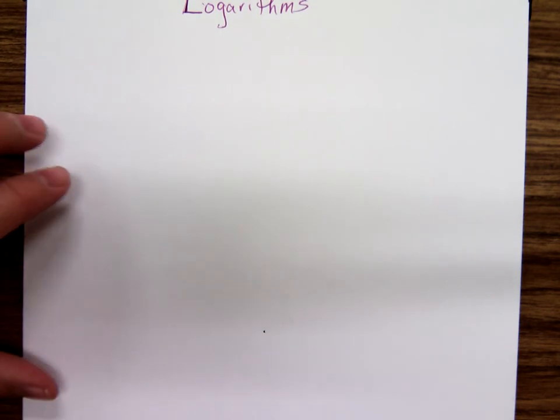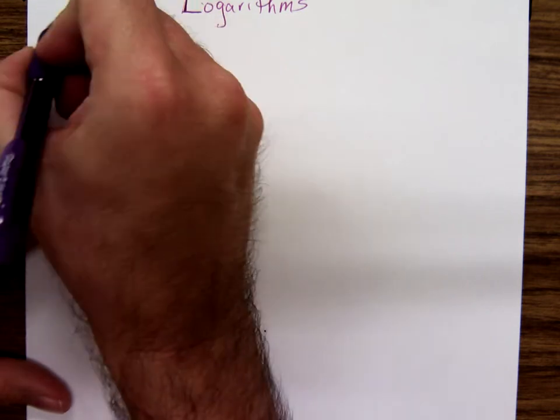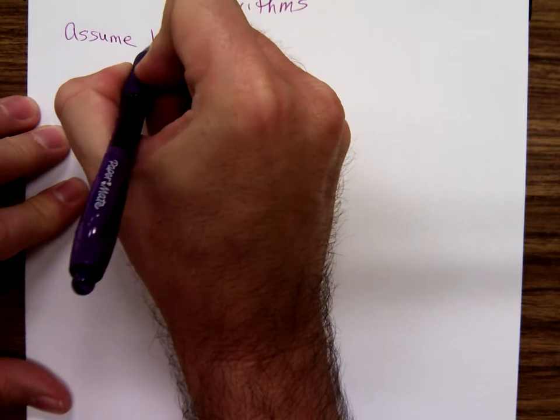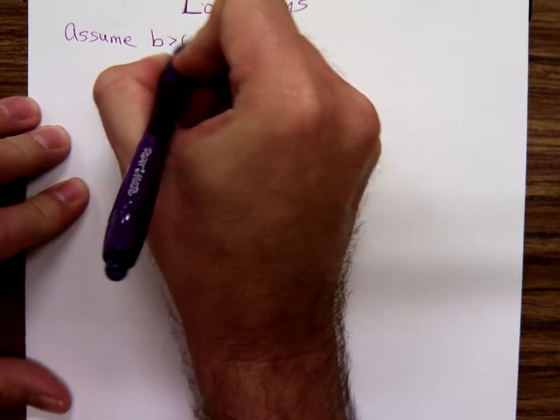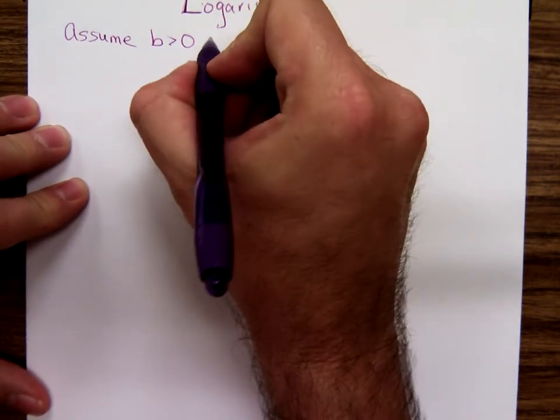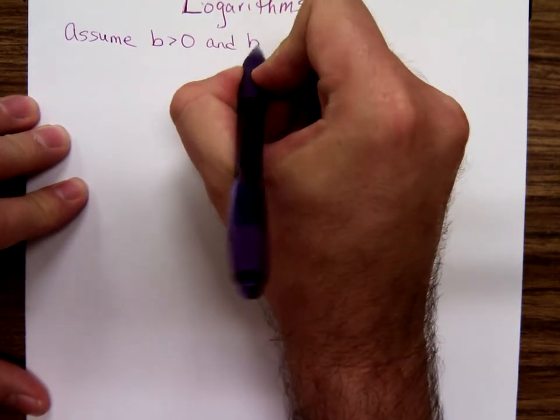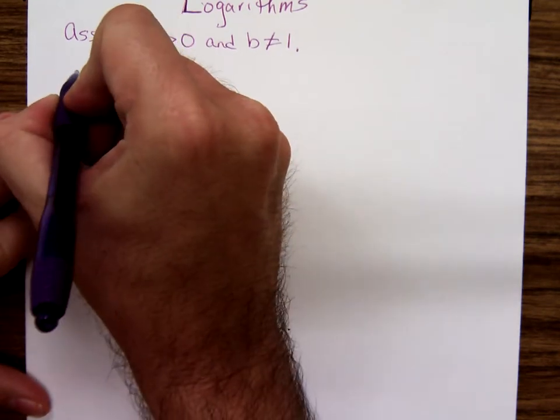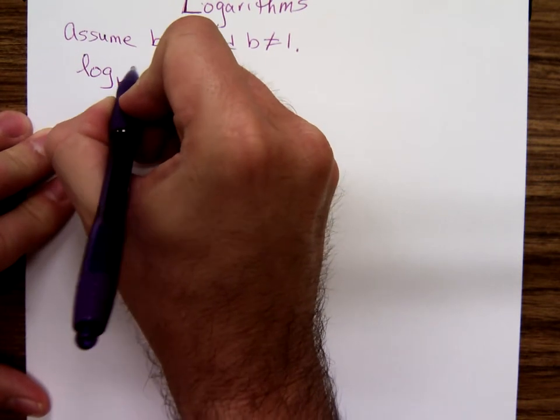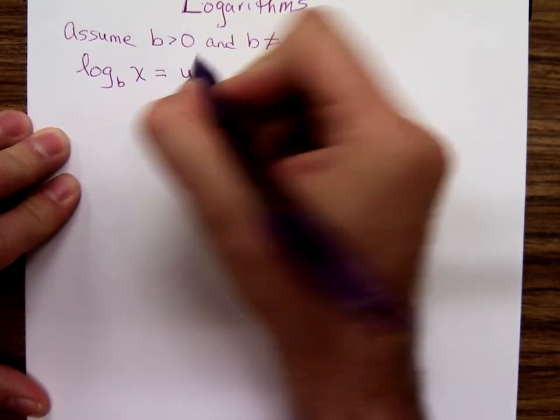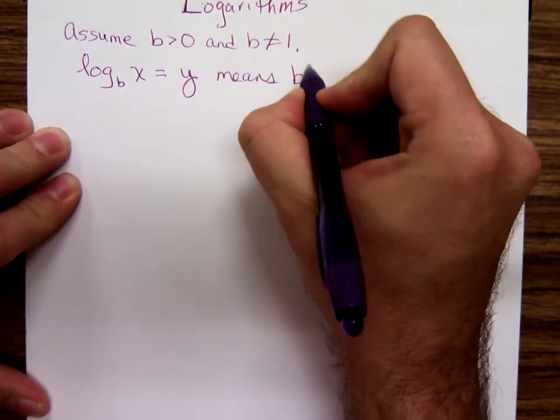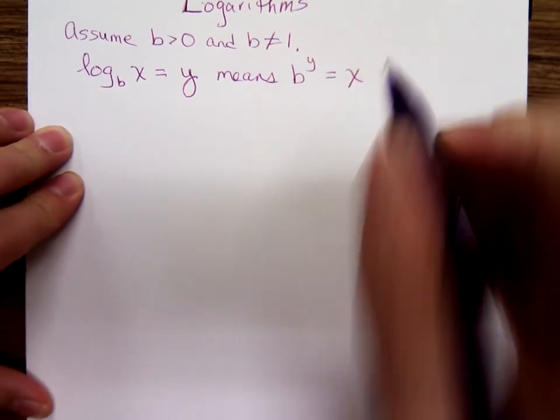First of all, I'm going to state the definition of logarithm. We're going to assume whenever I use the variable b that it's some positive number but not the number one. So log base b of x equals y means b to the y power is x.